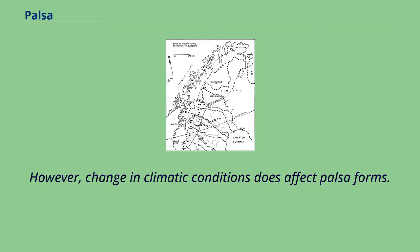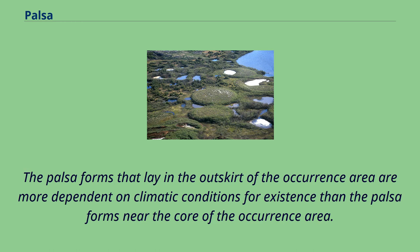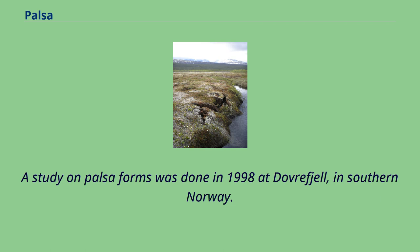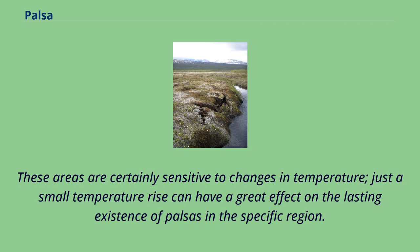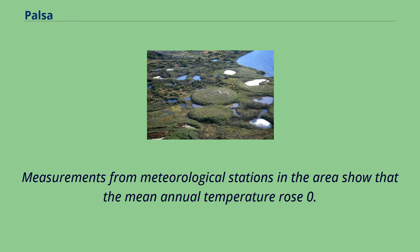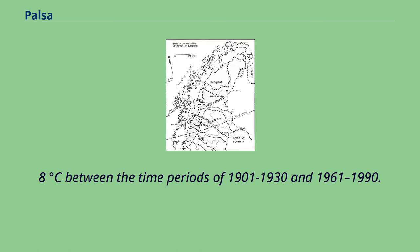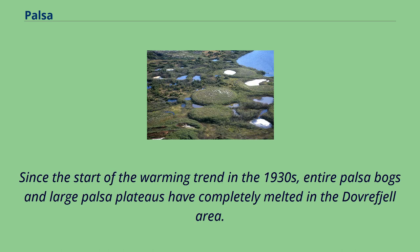However, change in climatic conditions does affect palsa forms. The palsa forms that lay in the outskirt of the occurrence area are more dependent on climatic conditions for existence than the palsa forms near the core of the occurrence area. A study on palsa forms was done in 1998 at Dovre fjell in southern Norway. At the time of observation, the mean annual temperature lay just under zero degrees Celsius in the area. These areas are certainly sensitive to changes in temperature; just a small temperature rise can have a great effect on the lasting existence of palsas in the specific region. Measurements from meteorological stations show that the mean annual temperature rose 0.8 degrees Celsius between the time periods of 1901–1930 and 1961–1990. Since the start of the warming trend in the 1930s, entire palsa bogs and large palsa plateaus have completely melted in the Dovre fjell area.